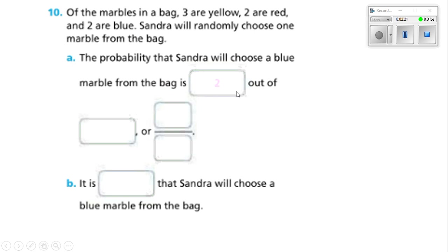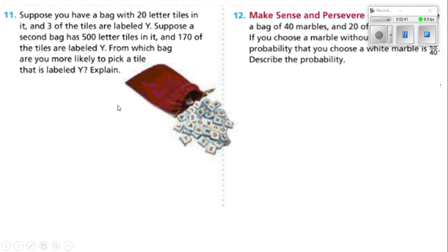So the probability is two out of seven, or two over seven. It is unlikely that Sandra will choose a blue marble — that's not very good odds.